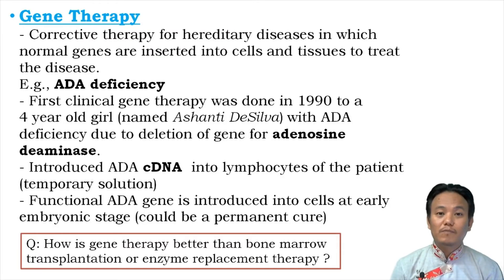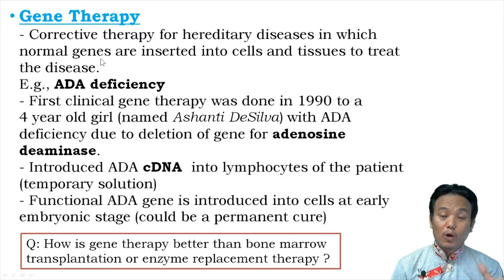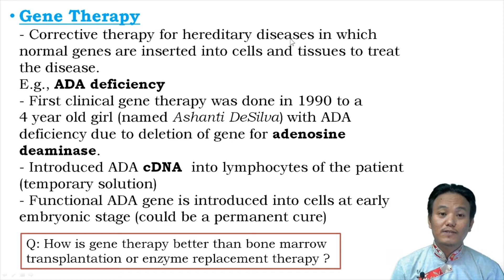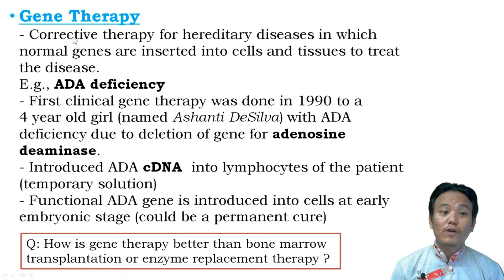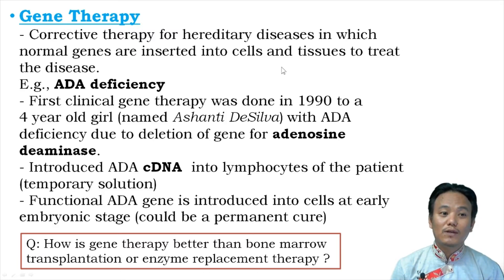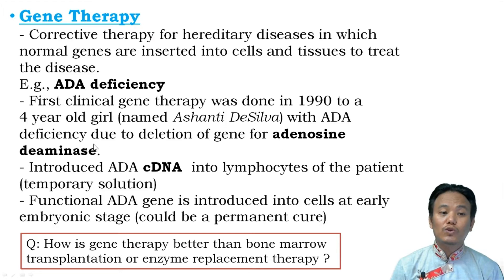Let us now discuss gene therapy. Gene therapy is a form of corrective therapy for hereditary diseases in which normal genes are inserted into cells and tissues to treat the disease. Hereditary diseases are caused by defects in genes and can be passed from parents to offspring. One example of hereditary disease given in the textbook is ADA deficiency. ADA stands for adenosine deaminase, an enzyme extremely crucial for proper functioning of a person's immune system.